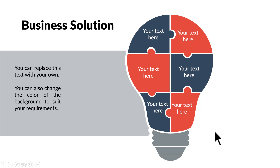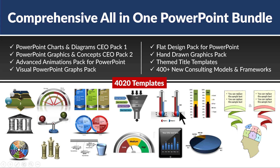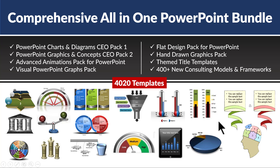Another example is a non-animated slide showing six components of a business solution. If you want a hand-drawn variation, you can use something that covers six parts of a belief or six factors of an idea. The best part is that when you get the comprehensive all-in-one PowerPoint bundle, all these templates are ready-made for you to pick and use. You will not be wasting time creating graphics from scratch — just replace the sample text with your own text and your slides get ready in minutes. I will leave a link to this product in the description box below the video.